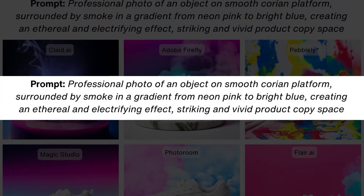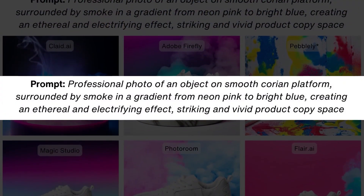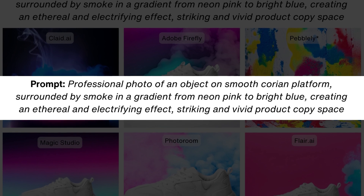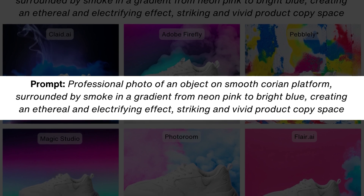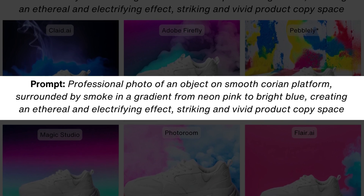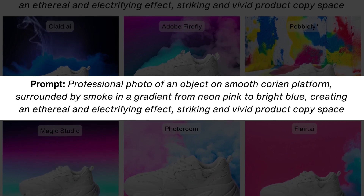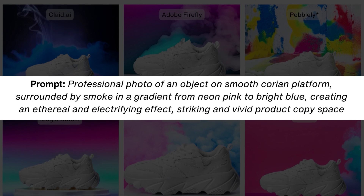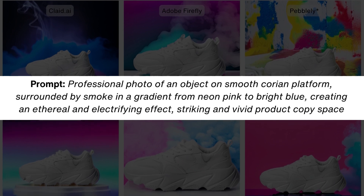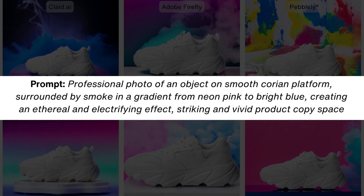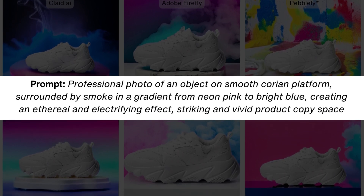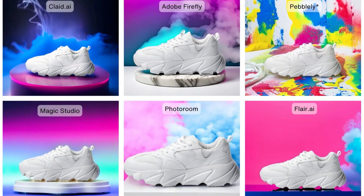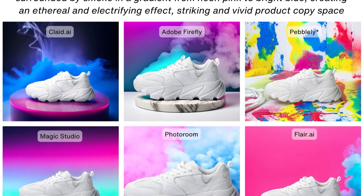The second prompt we used is: 'Professional photo of an object on a smooth Corian platform surrounded by smoke and a gradient from neon pink to bright blue, creating an ethereal and electrifying effect, striking and vivid product, copy space.' And these are the images each tool generated.